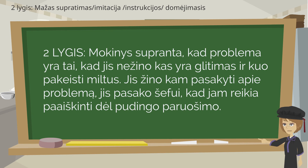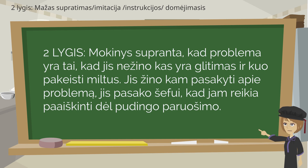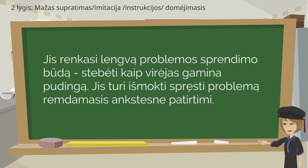Level 2. The student knows why the problem exists — that he doesn't know what gluten is and how to replace flour. He knows who to address to report a problem. He tells the chef that he needs an explanation about the pudding preparation. He is taking an interest in finding solutions for simple problems, watching how the cook makes a pudding. He needs to learn how to solve problems based on previous experience.